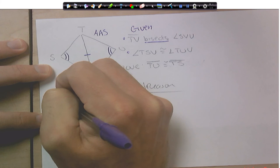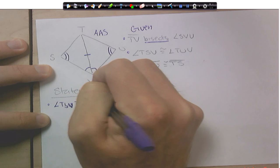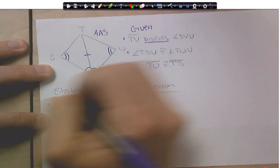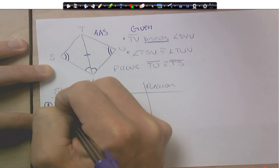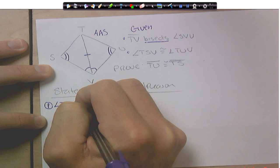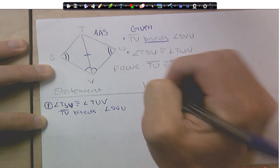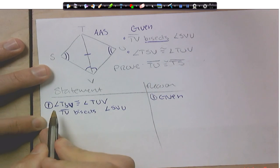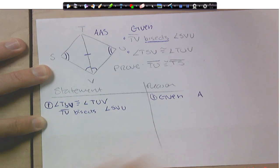TSV, sorry, angle TSV is congruent to triangle, or angle, sorry, TUV. Okay. And then we also have, so this is step one, sorry. Then we also have TV bisects angle SVU. Okay. So, this is all given. Okay. I kind of ran out of room over here, so I'm going to mark my stuff over here. But I have an angle already, so that's good.